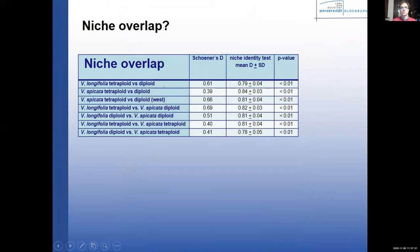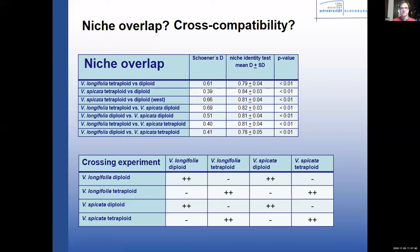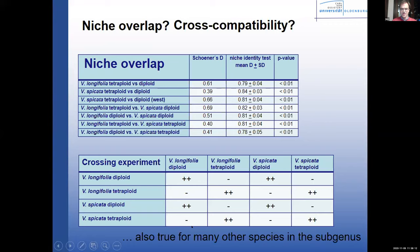We did crossing experiments and found that all diploids — whether longifolia or spicata — can easily cross and produce seeds. Tetraploids, regardless of species, can also easily produce seeds. However, ploidy is a strong reproductive barrier in these species, and this is true for many other species in the subgenus — we have begun crossing other species and the same pattern holds. We did GBS analysis across Eurasia and found hybrids popping up everywhere across Europe — not at high frequency, but quite frequently wherever they co-occur, wherever diploid spicata meets diploid longifolia, and wherever tetraploid longifolia meets tetraploid spicata.